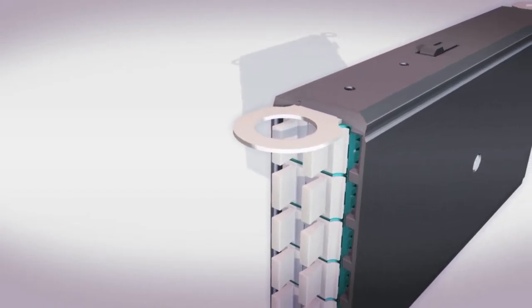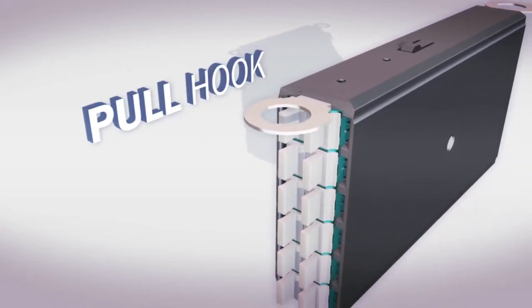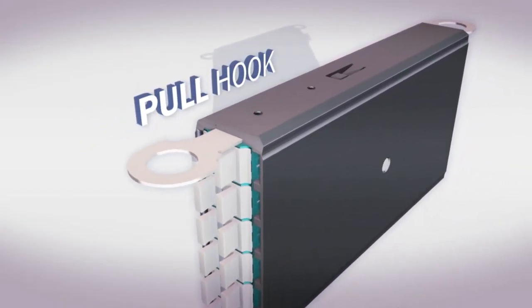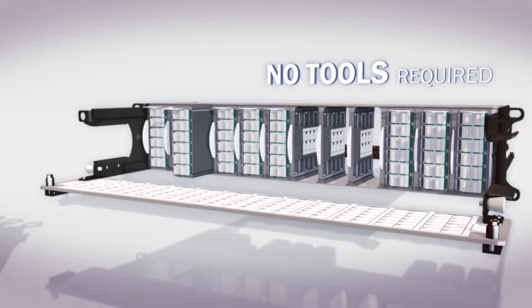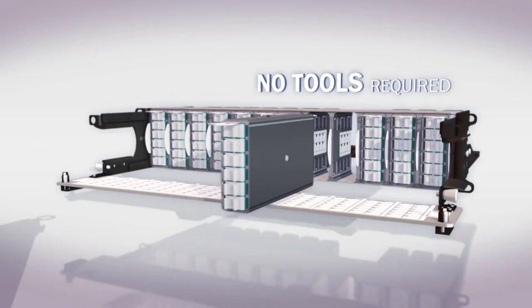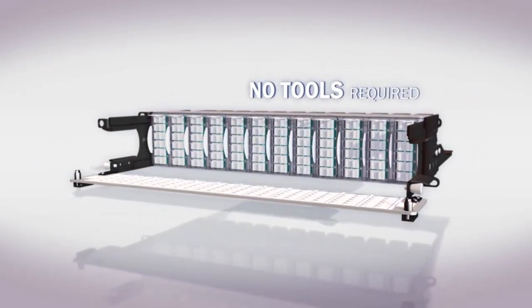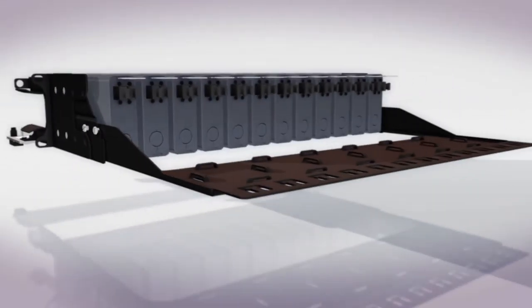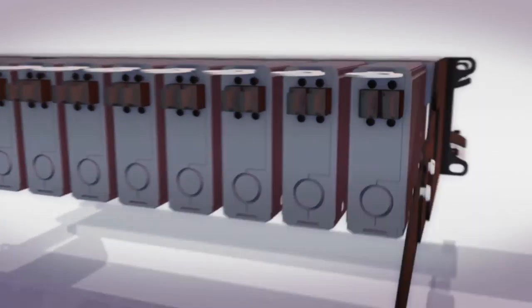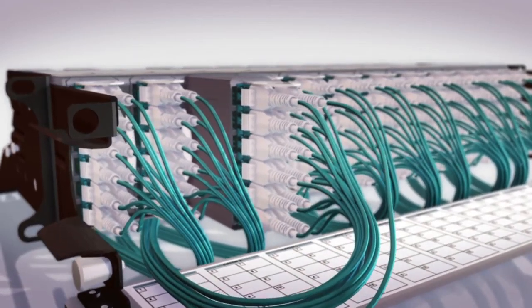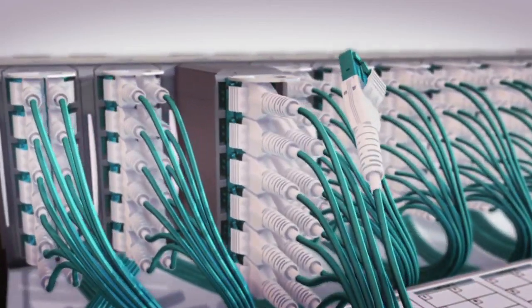All three of these modules feature the convenient pull hook which activates the latching system that's used to fix or remove modules individually. No tools are required for installation or removal, resulting in easy and fast installs. The latching system also allows easy access to the front or rear of the modules, so single fiber connections don't need to be fully removed to be serviced.